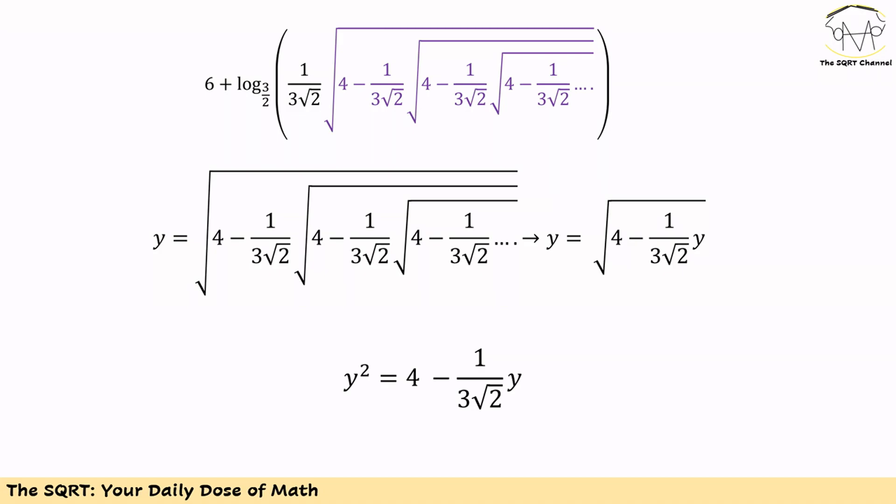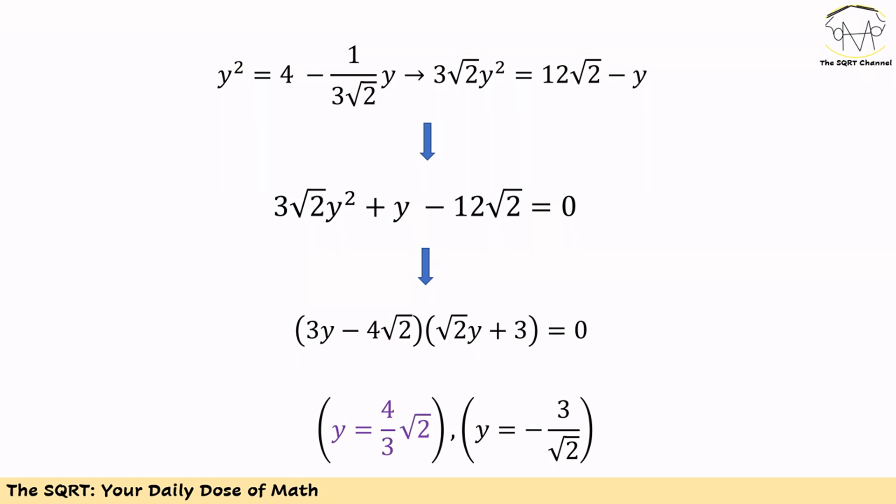Now we are going to simplify it further. First, we are going to multiply both sides by 3 times square root of 2, and then move all terms to just one side of the equation. Now we have a quadratic equation and we can factor it out into two terms.